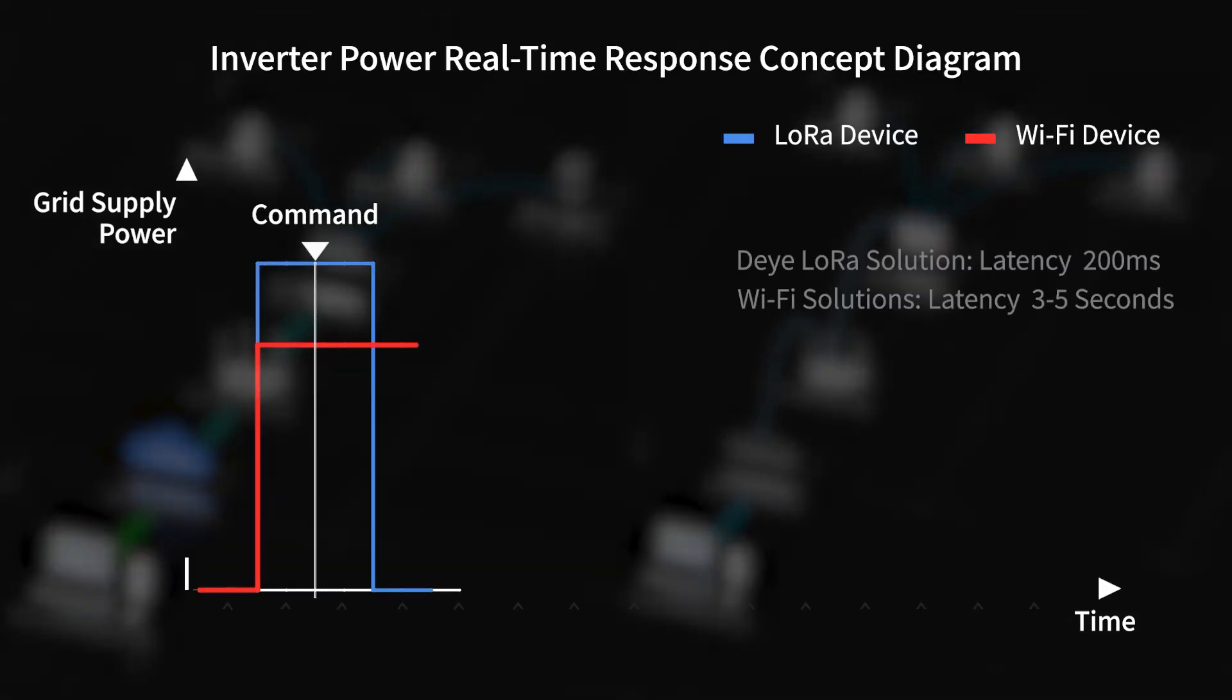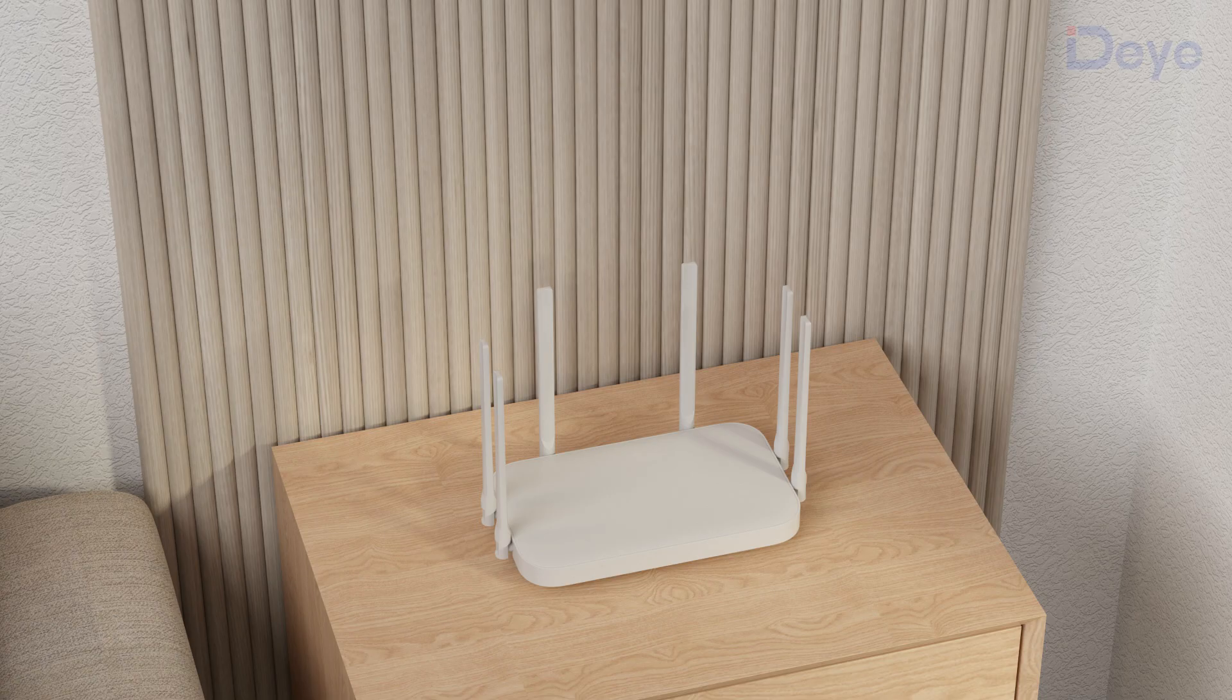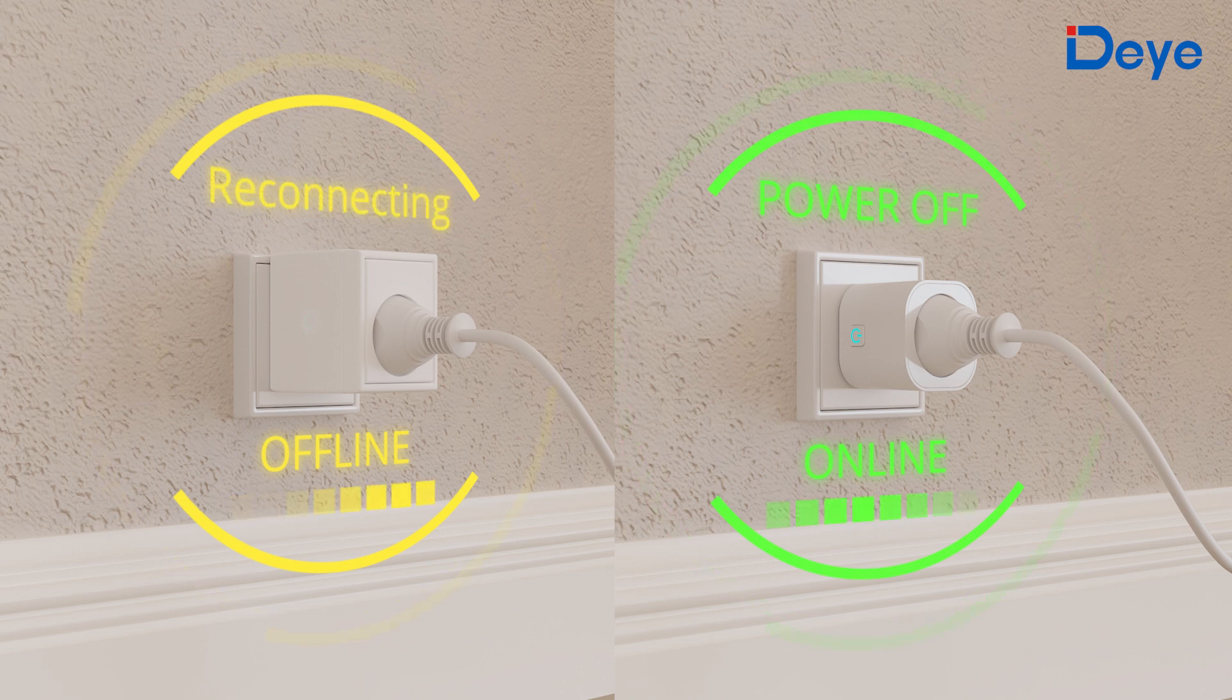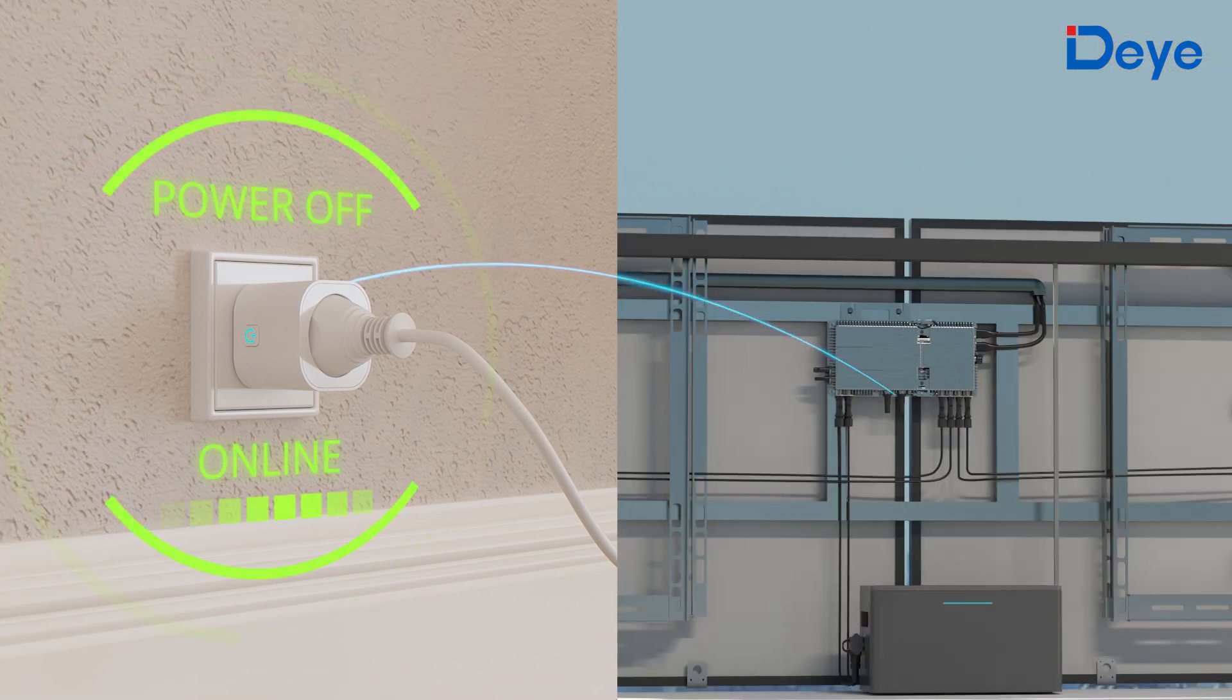Excessive latency makes it difficult for household energy systems to maintain stable operation. If the network goes down, Wi-Fi devices may stop working, but LoRa devices continue running essential tasks and executing local commands.